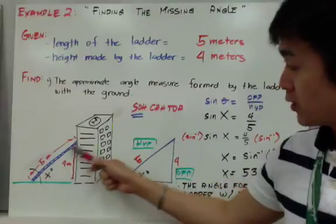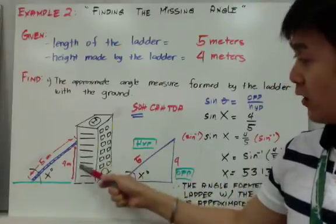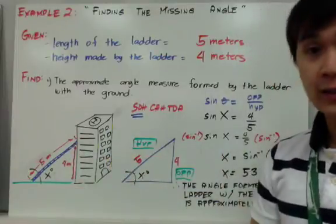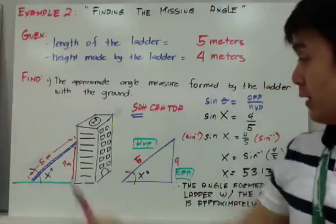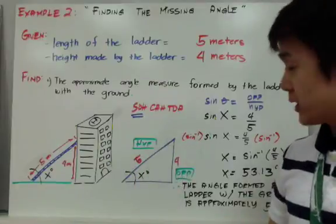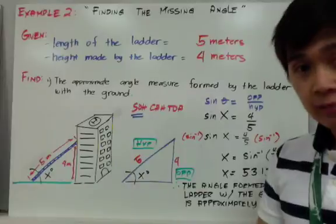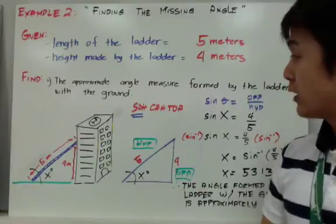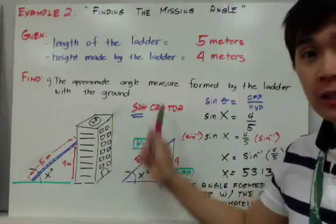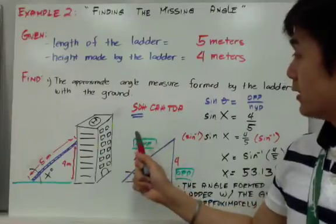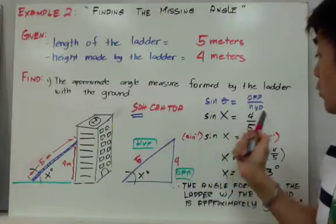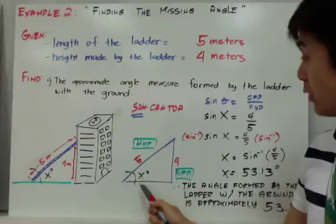Given the illustration, 5 meters is the ladder length and 4 meters is the height against the building. We are looking for x, the degree measure. Translating it into a right triangle, we have the hypotenuse and the opposite side, and we are looking for x degrees using SOH CAH TOA. Since we have opposite and hypotenuse, we will use the sine formula: sine theta equals opposite over hypotenuse.